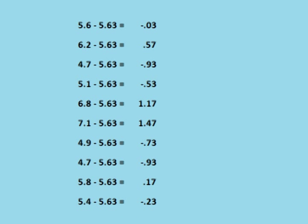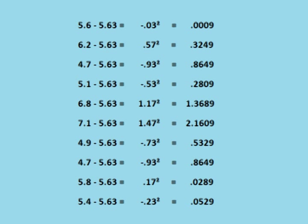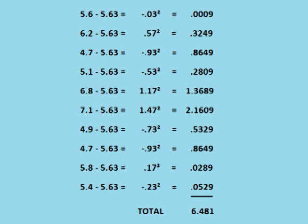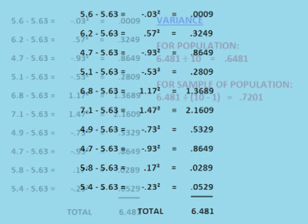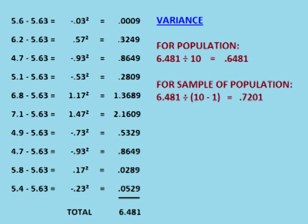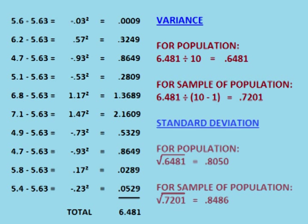We then subtract that mean of 5.63 from each data point. We square each of the answers. We add the squared answers together to get the total squared distance from the mean. We then divide the total squared distance from the mean by either the number of data points or the number of data points minus 1 to get the variance. We take the square root of the variance to get the standard deviation.